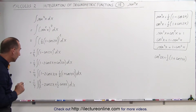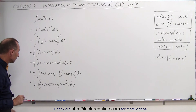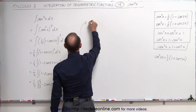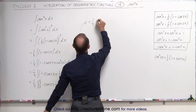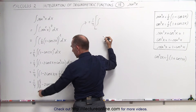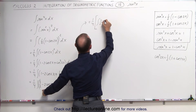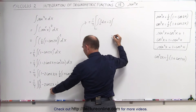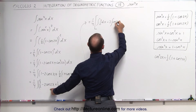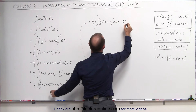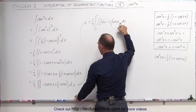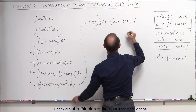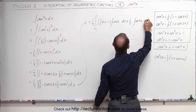And now we're about ready to start integrating this. Let's write this as three separate integrals. This is equal to one quarter times: the first integral is three over 2 times dx, minus the second integral, which is 2 times the integral of cosine of 2x dx, plus one half times the integral of cosine of 4x dx.